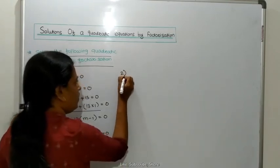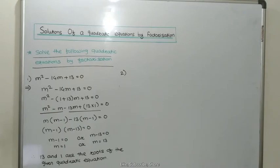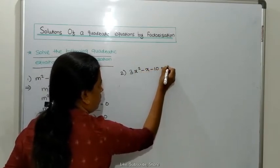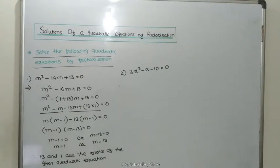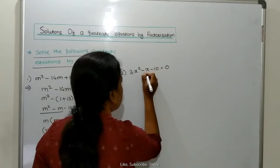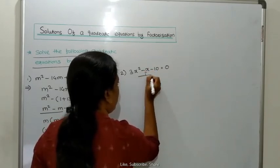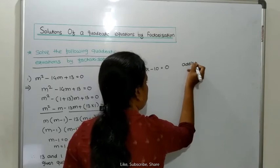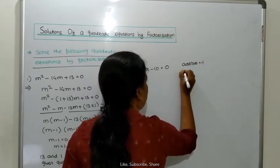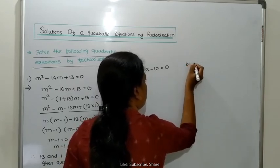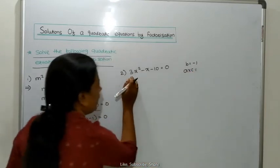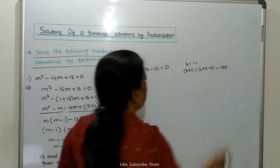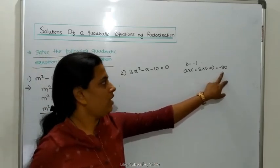Next question — second one: 3x squared minus x minus 10 is equal to 0. When we solve this, the coefficient of x is 1, meaning minus 1. We need two numbers whose addition gives minus 1 and whose multiplication gives A into C. A is 3, C is minus 10, so A into C is minus 30. When we add minus 6 and 5, we get minus 1, and when we multiply minus 6 with 5, we get minus 30.